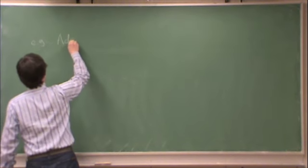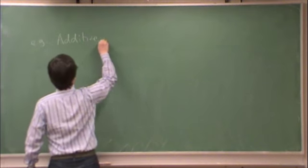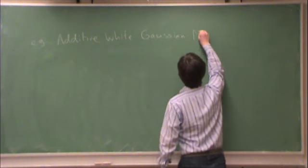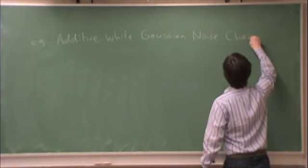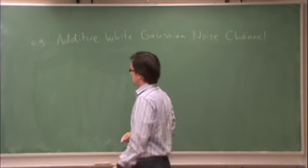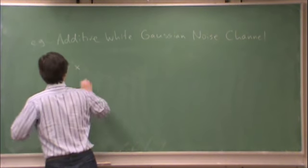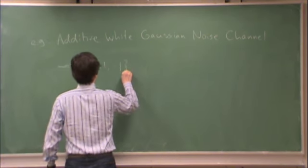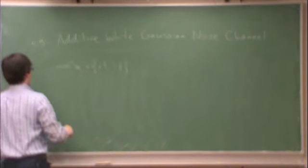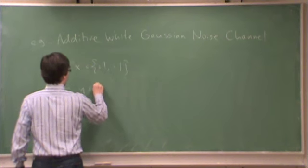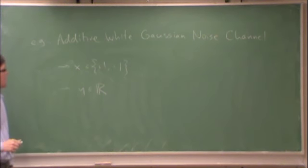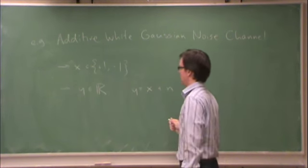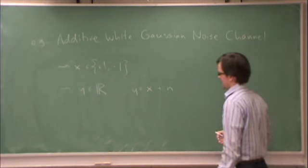The additive white Gaussian noise channel. Here, the channel inputs x are assumed to be in the alphabet plus one minus one instead of zero one. And the outputs y are continuous, they're the real numbers, where we have y equals x plus n. This is now a real addition, not mod two addition, because n is continuous.